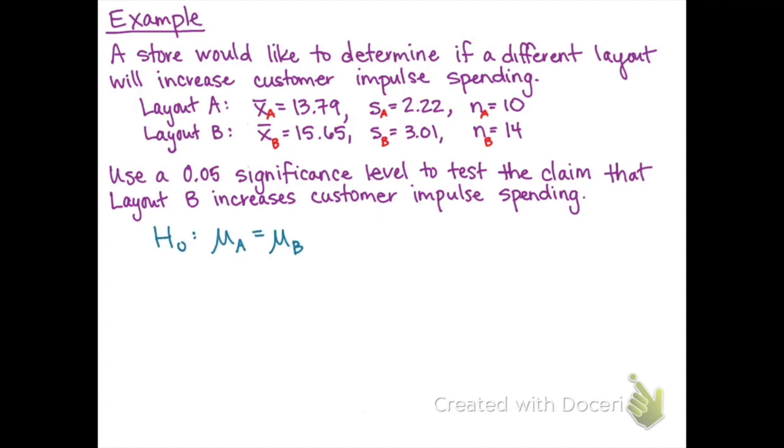Use a 0.05 significance level to test the claim that layout B increases customer impulse spending. Our null hypothesis will be that μA equals μB, or in other words, the two layouts have no difference in their mean. And the alternative hypothesis will be that μA is less than μB, or in other words, layout B has a higher mean spending amount.